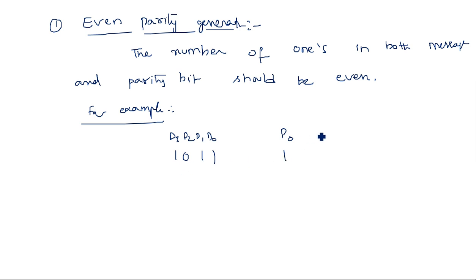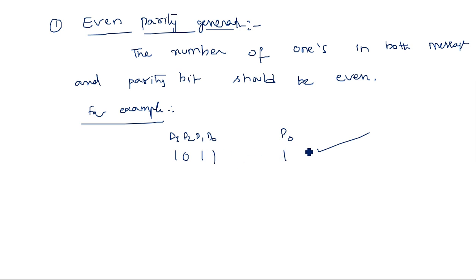Now let me tell you whether the even parity generator condition is satisfied or not. One, two, three, four — this is satisfied. In the message bit 1011 there are three ones, which is an odd number. That is why to make it even parity we are taking this parity bit as one, so that the total number of ones overall is even. Suppose I have 1111 — four ones are there — then the parity bit is simply zero, because already we have an even number of ones in the message bit.